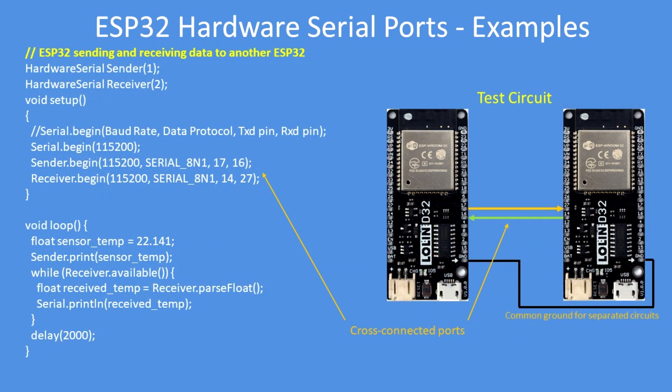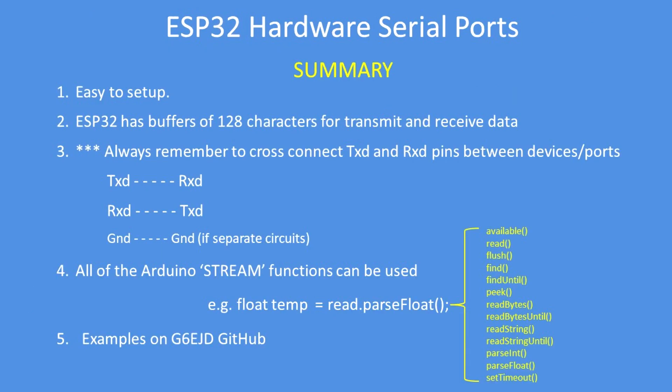Here's yet another example, this time using two separate units with identical code — receiving floating point data. It sends floating point data, receives it, and again uses those stream functions. This one uses parseFloat, which receives a set of characters and converts them into a floating point value, stores it in a variable, and prints it.